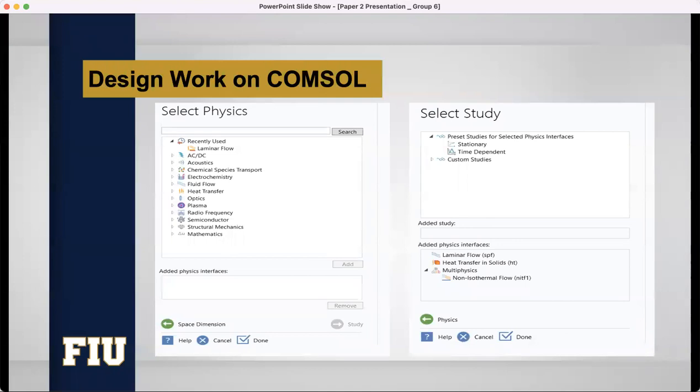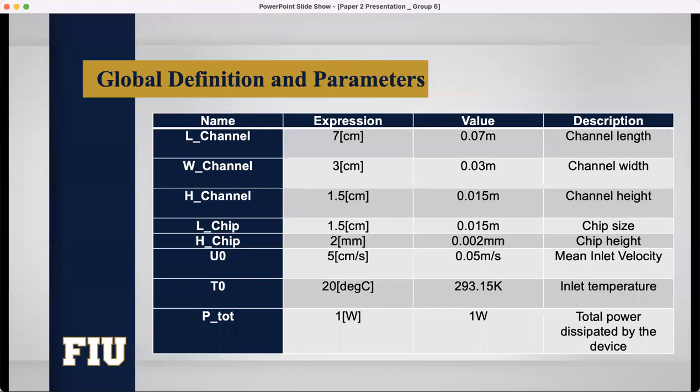After that, we will go to the next phase, which is select study. From the select study page, we can see there are two different options. One is stationary and the other is time-dependent. In our case, we will use stationary. After selecting stationary, we will select done. And then, we will go to the main phase to design our model, which is the geometry phase.